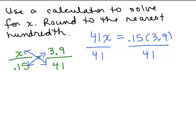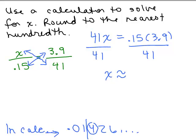With a calculator, we'll just enter it. 0.15 times 3.9, divided by 41. And in my calculator, I get 0.01426, et cetera. What matters is that I have to really go look at the third number here. It's a 4, so it does not round up. So this is rounded to the nearest hundredth, approximately 0.01, which is one hundredth.